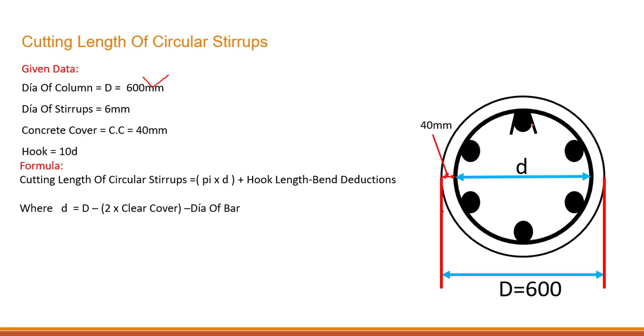Plus, we have two hooks over here, this hook and this hook. Minus we need to do the bend deductions. Definitely we have two hooks and two bends over here. We need to do the deductions for this as well.